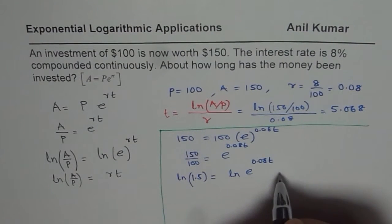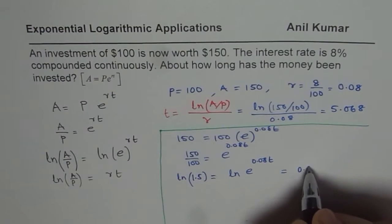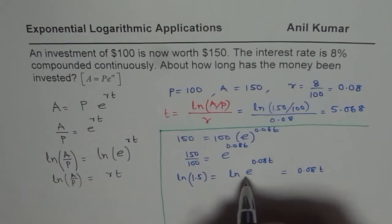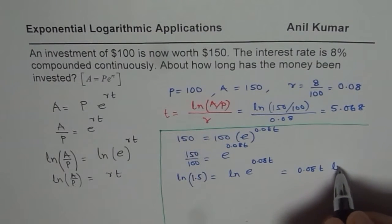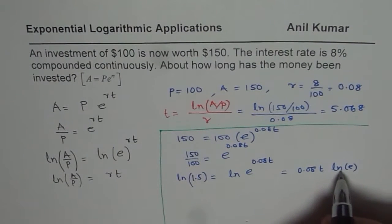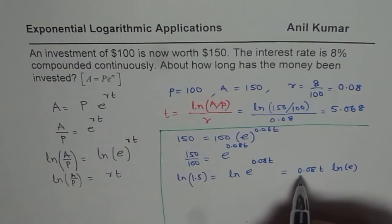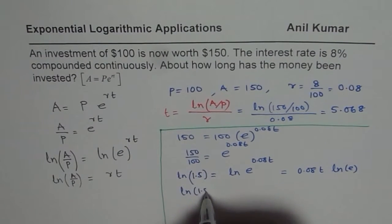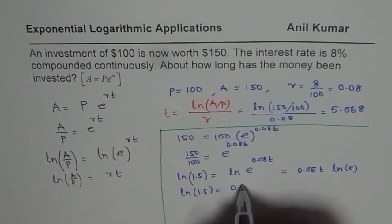Now that should be written as 0.08 T, because ln, or you could write ln E. Now ln E is 1, and that is why it is equal to 0.08 T. So let's rewrite this. ln 1.5 equals 0.08 T.